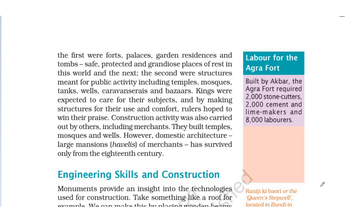The first type of structures built by kings included: forts (meaning castles), palaces (meaning the royal court or mahal), gardens, residences where the king lived, and tombs — meaning samadhi sthal, the memorial sites built in ancient times. These were safe, protected and grandiose places of rest in this world and the next. Such grand, decorative and attractive buildings were constructed in those times.